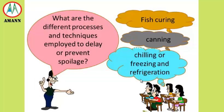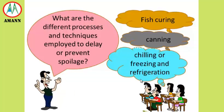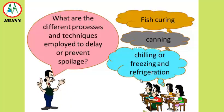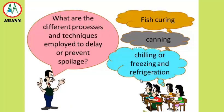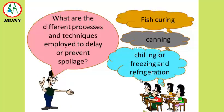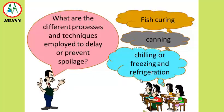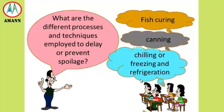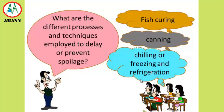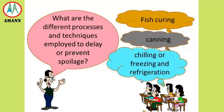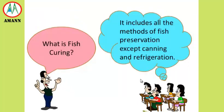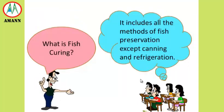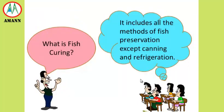The different processes and techniques employed to delay or prevent spoilage are fish curing, canning, freezing, and refrigeration.